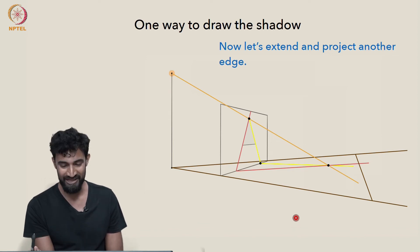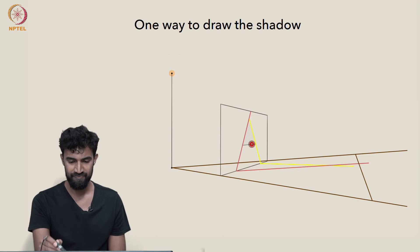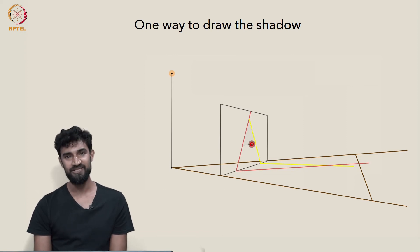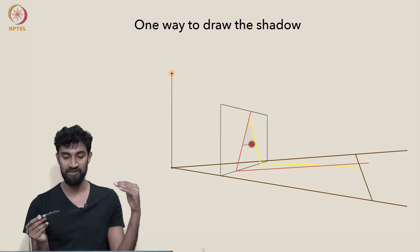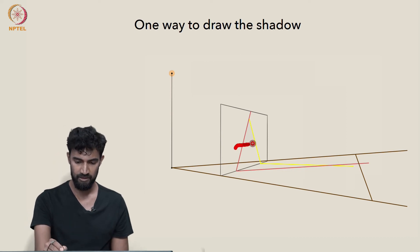This edge here. So as a first step, I would like to connect, to extend it till it meets the ground plane. But we have a problem. This one isn't meeting the ground plane within the signboard. We're going to have to extend our signboard, but that's fine.